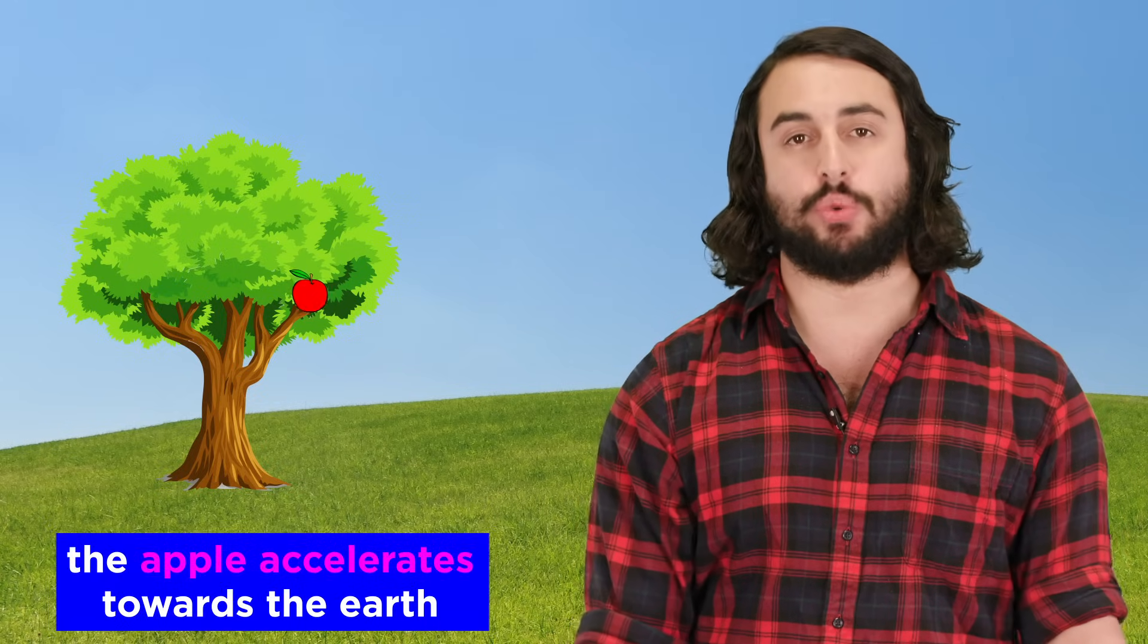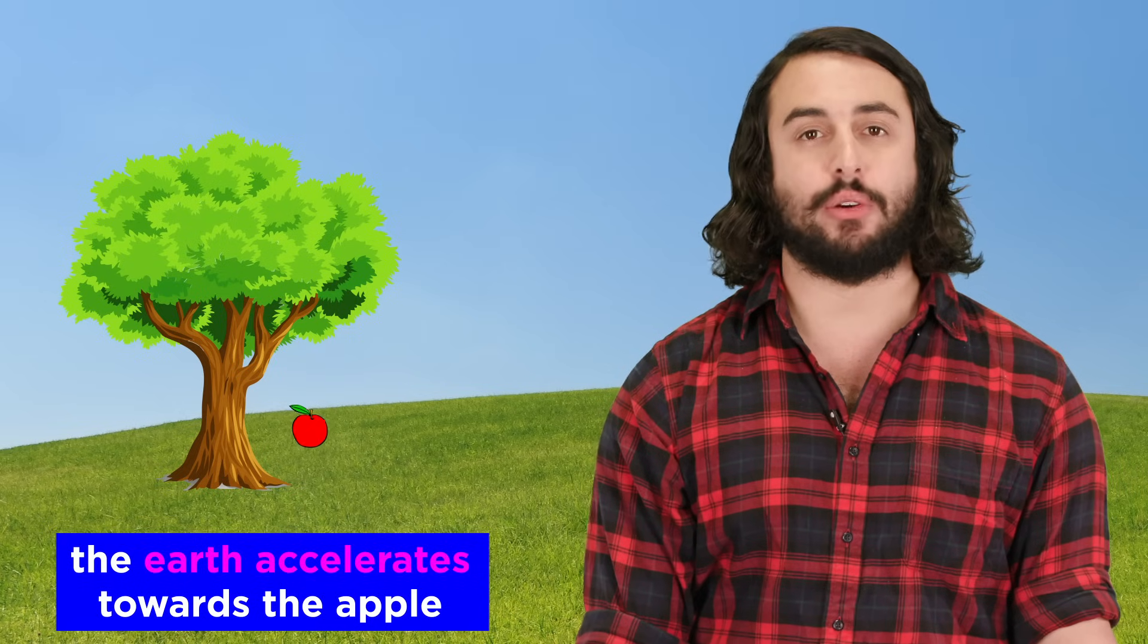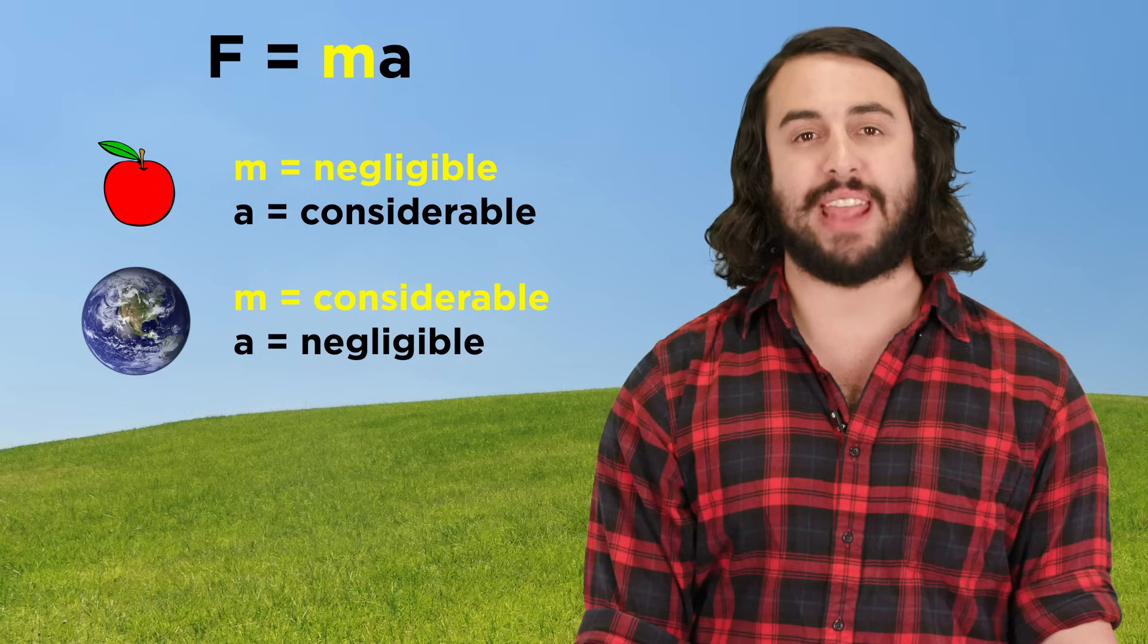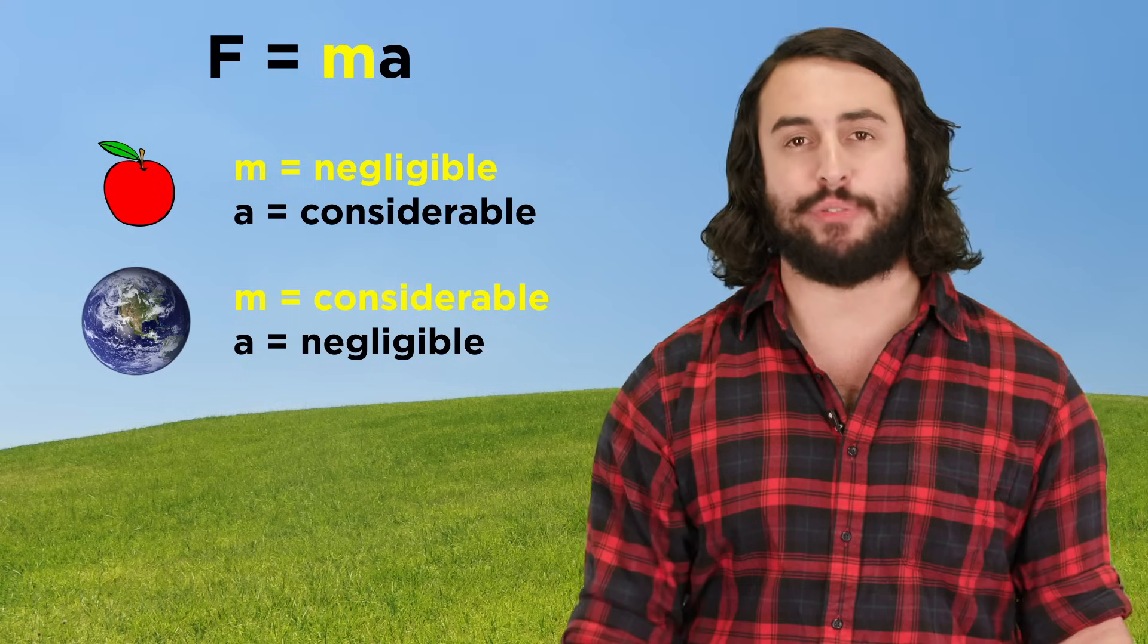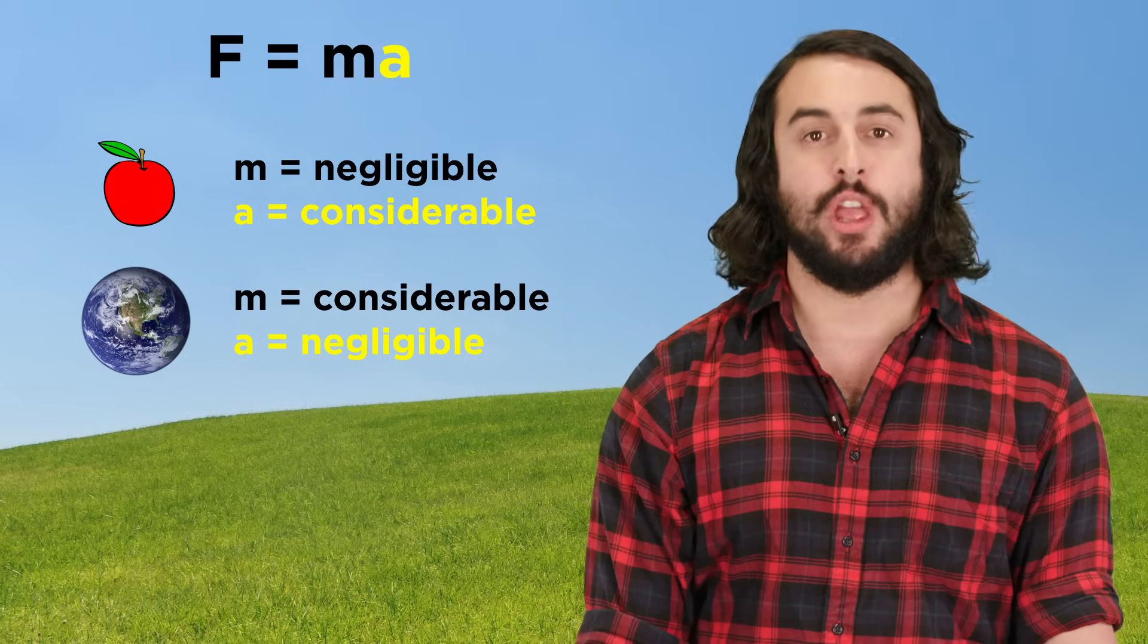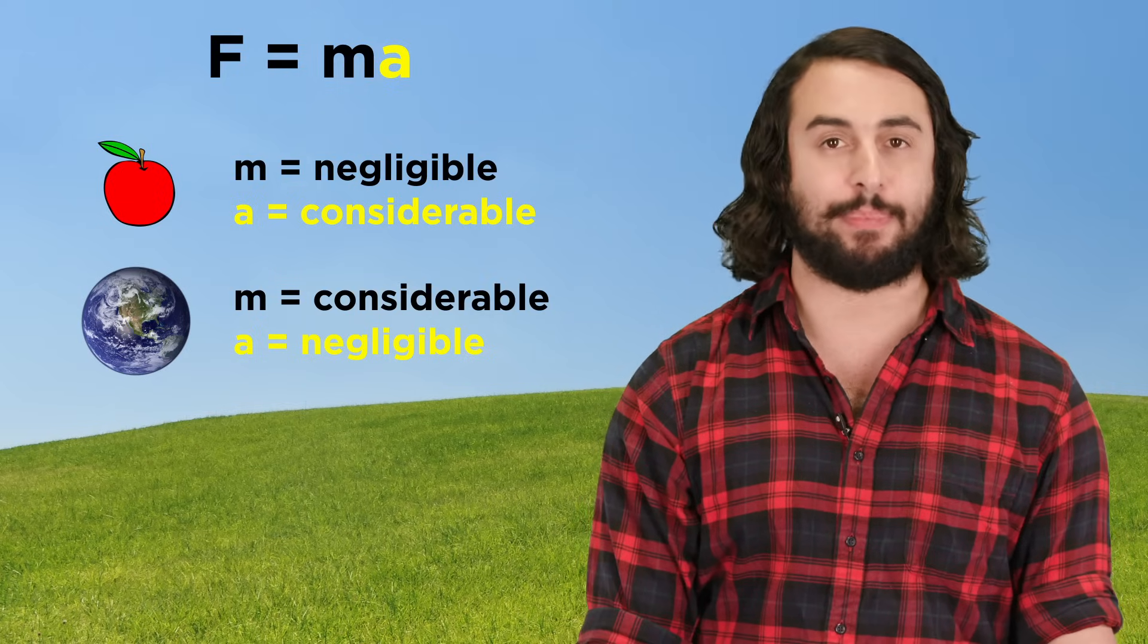The same can be said for Newton's falling apple. The apple accelerates towards the earth, and the earth accelerates towards the apple, but the earth is more massive than the apple by an inconceivable factor, so the acceleration of the earth is not even measurable, whereas we can visually confirm the acceleration of the apple.